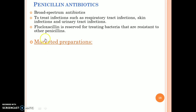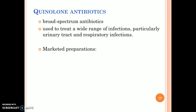Penicillin antibiotics are broad-spectrum antibiotics used to treat infections such as respiratory tract infections, skin infections, and urinary tract infections. Flucloxacillin is reserved for treating bacteria that are resistant to other penicillins.